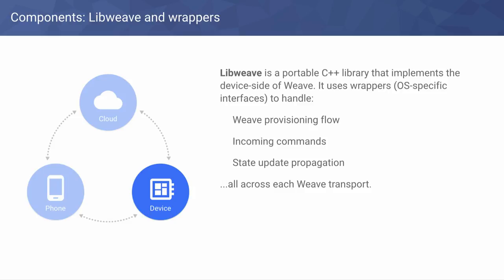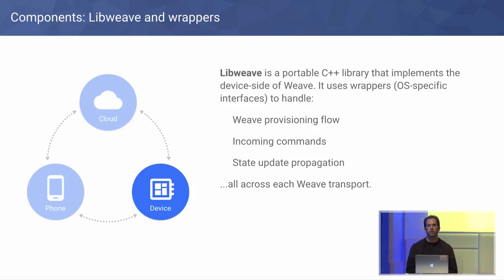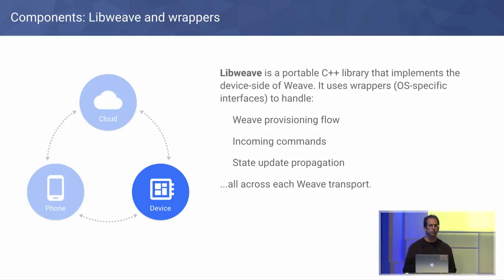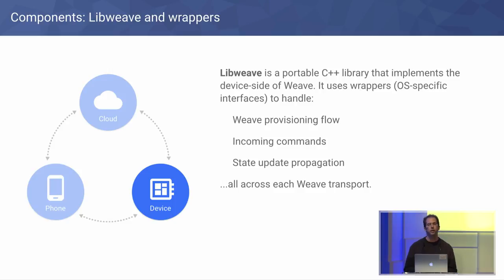On the device side, implementing this protocol — especially with all the security considerations across different transports — is a little bit of a mess. We've tried to take on as much of that work as we can, and we've built out a portable C++ library that can be taken into devices to enable them with Weave. We've slimmed out things that might already be on an embedded system to avoid unnecessary resource usage. We've also provided several wrappers to make it easy to integrate this library onto common systems — naturally Brillo is one, there's an Ubuntu wrapper available, and we'll be adding additional wrappers for more system types as time goes on.